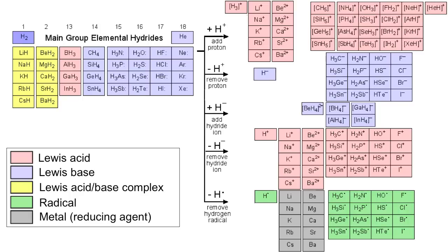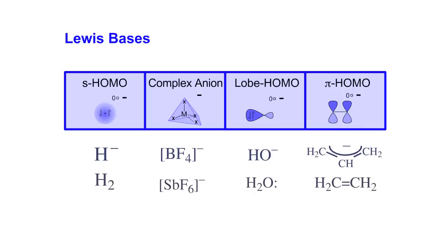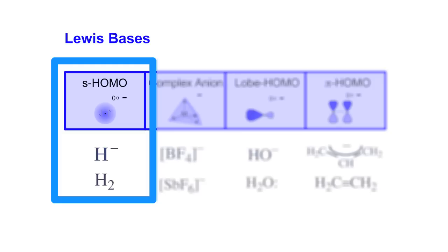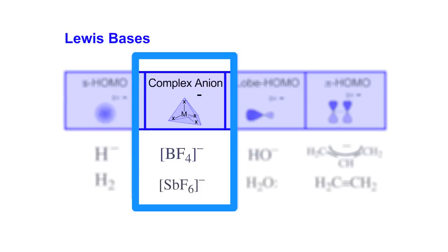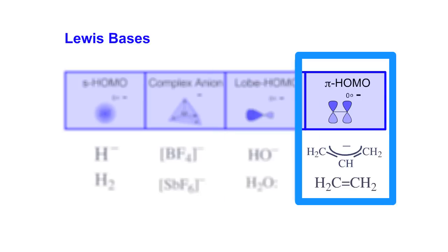So the hydrogen probe experiments give us quite a zoo of chemical species. Many of these are Lewis acids and Lewis bases and can be organised by type. There are four general types of Lewis base: S-HOMO Lewis bases (the hydride ion and hydrogen), complex anion Lewis bases such as the tetrafluoroborate ion, lobe-HOMO Lewis bases which are the classic lone pair species such as hydroxide ion and water, and pi-HOMO Lewis bases which are electron-rich pi-systems such as the allyl anion and ethene.